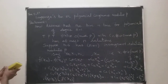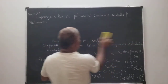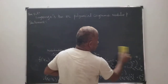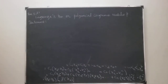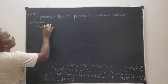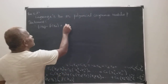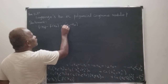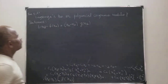So therefore I can write F of xk minus F of x0 is equal to xk minus x0 into G of xk.